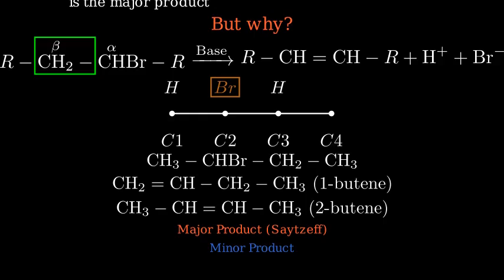But why are more substituted alkenes more stable? There are two major factors that contribute to this stability: hyperconjugation and the inductive effect.